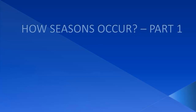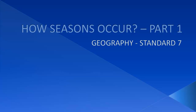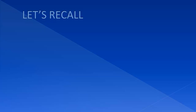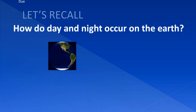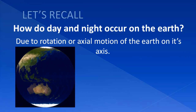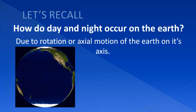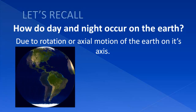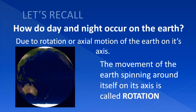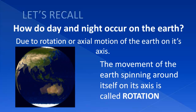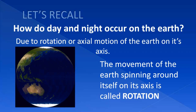How seasons occur, Part 1 — Geography Standard 7. Let's recall: how do day and night occur on the Earth? Day and night occur due to rotation, or axial motion, of the Earth on its own axis. The movement of the Earth spinning around itself on its axis is called rotation.